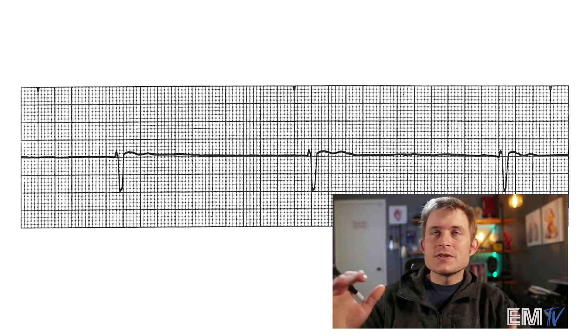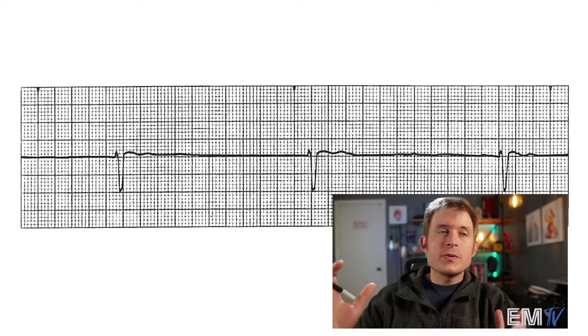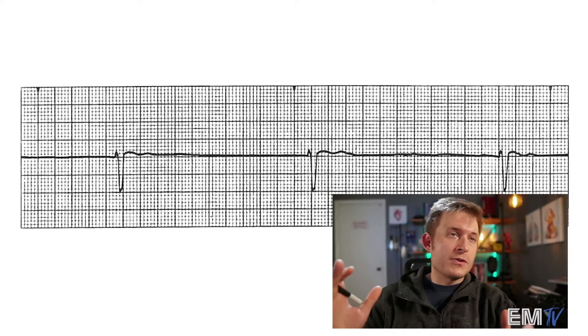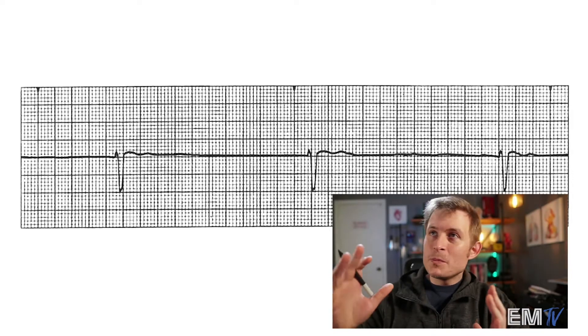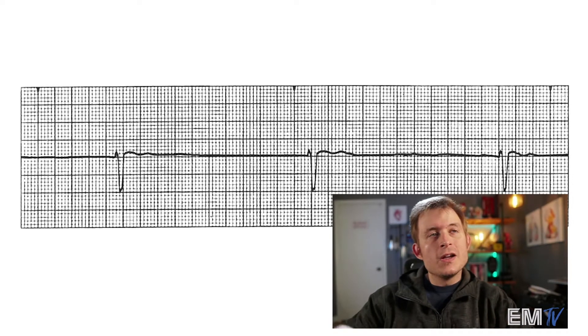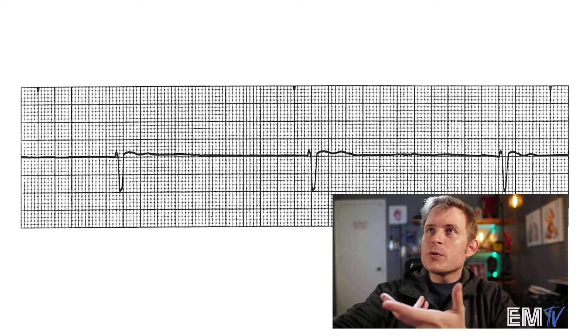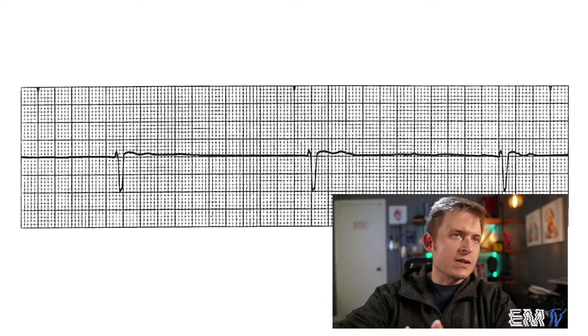The QRS complexes — there are three of them here — so the heart rate is going to be about 30. So again, already very bradycardic. Let's take a look at the actual waveforms to make a diagnosis.